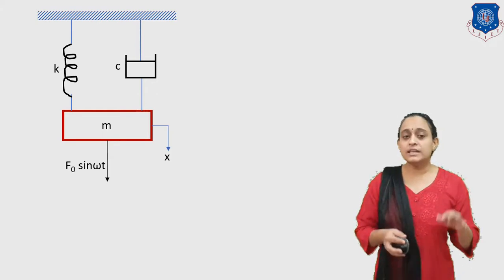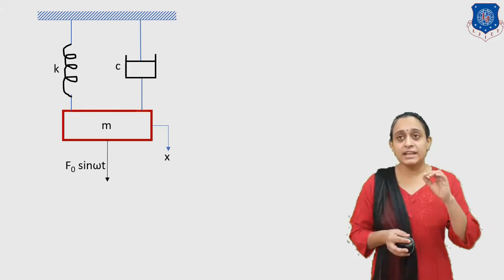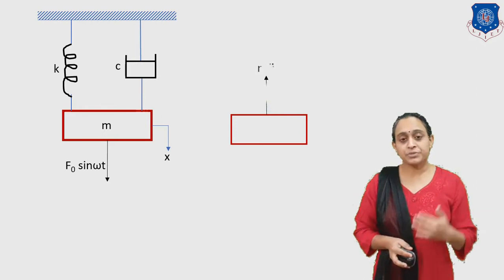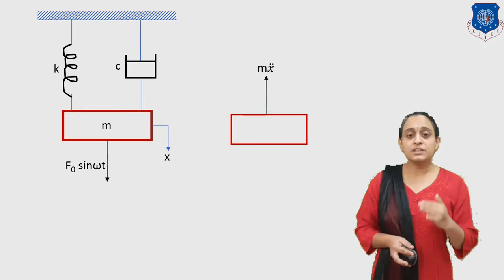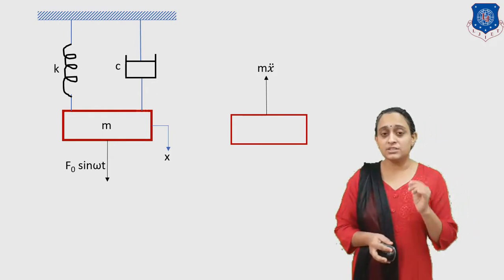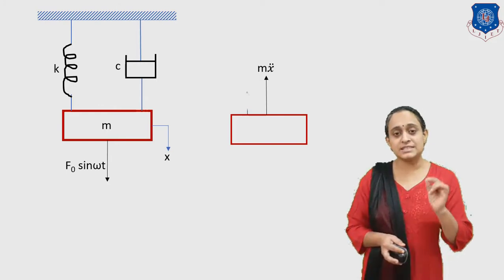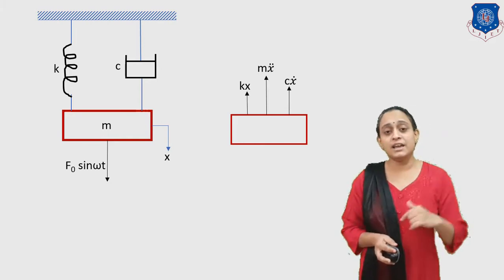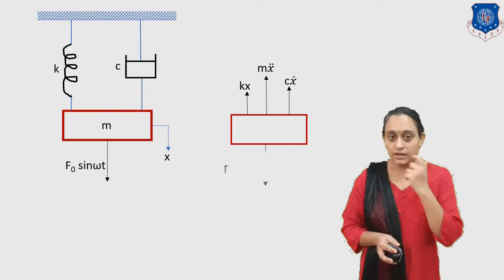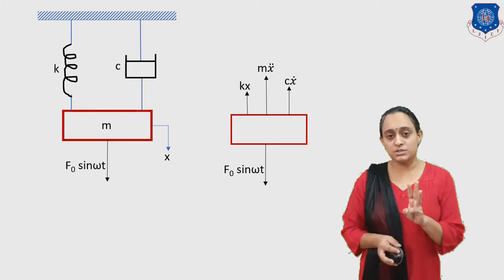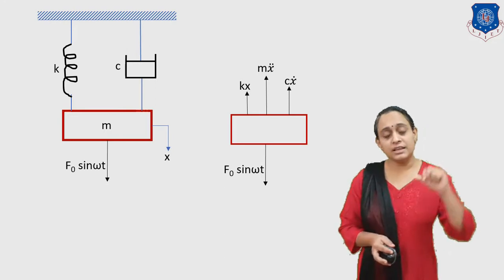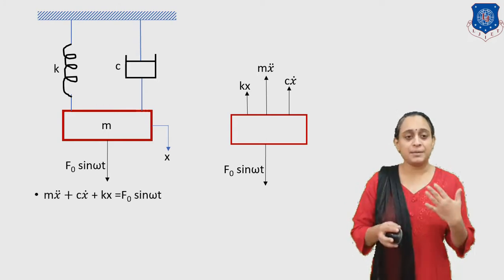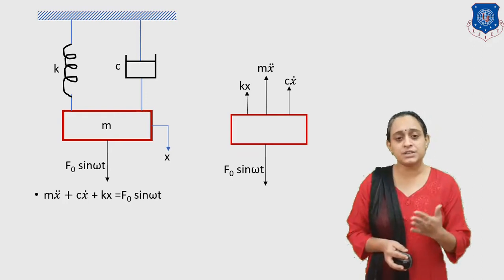We assume the mass moves downward with displacement x. Checking the free body diagram of this mass: the inertia force is Mẍ, the spring force is Kx, and the damping force is Cẋ — all acting upward — while the applied force F0 sin(ωt) acts downward. The equation of motion is: Mẍ + Cẋ + Kx = F0 sin(ωt).